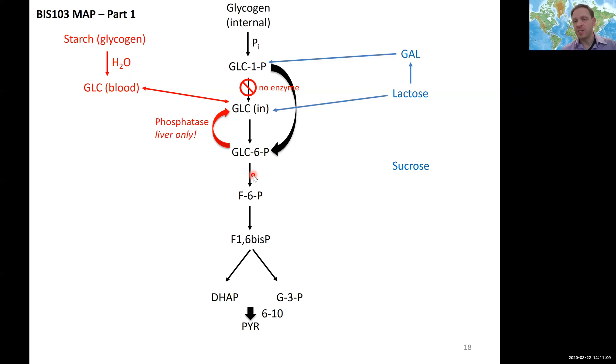Another disaccharide we had discussed was sucrose. Again, one molecule of glucose - easy, we just bring it into the cell. The other one was fructose, our ketose. And if you remember, we had two pathways on how to bring this into glycolysis. One was direct C6 phosphorylation to fructose 6-phosphate happening in all cells.